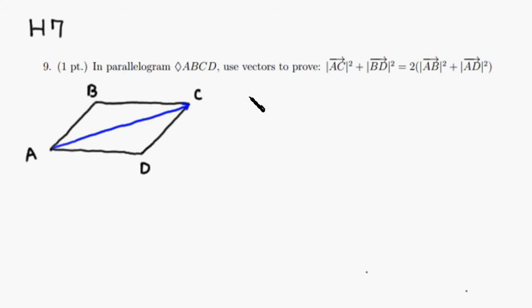Vector AC is the same thing as vector AB plus vector BC. Since it is a parallelogram, vector BC is actually the same vector as vector AD.